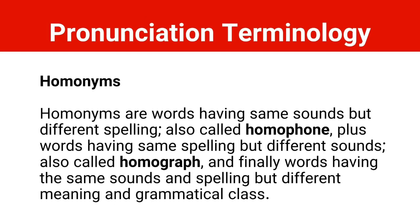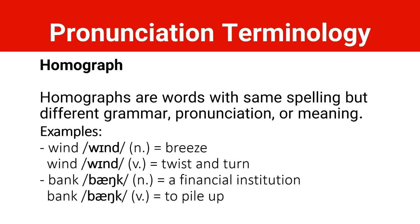Now let's talk about homonyms. Homonyms are words having the same sounds but different spelling — also called homophones — plus words having the same spelling but different sounds, which is also called homographs, and finally words having the same sounds and same spelling but different meaning and grammar class. This means that homonyms are divided into two categories: homographs and homophones.